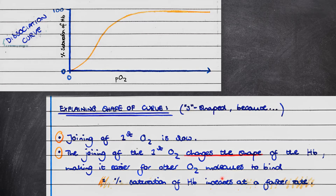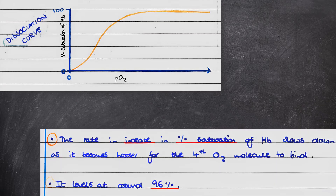This means that the percentage saturation of haemoglobin increases at a faster rate. However, it becomes more difficult for the fourth and last oxygen molecule to bind, so the rate of increase in percentage saturation slows down. The oxyhaemoglobin dissociation curve levels off at around 96 percent.